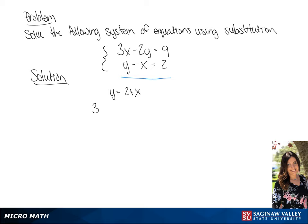Now we're going to plug in this equation in the first equation for y. So we get 3x minus 2 times 2 plus x equals 9, giving us 3x minus 4 minus 2x equals 9.